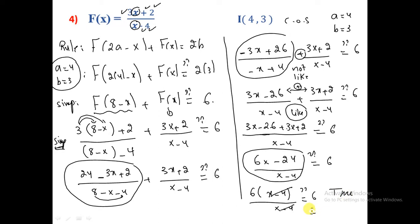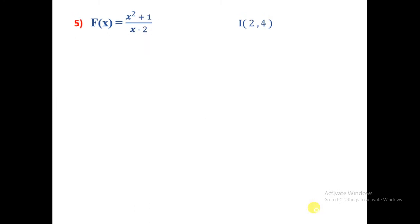Since we get 6 = 6, it is true. Therefore point I with coordinate (4, 3) represents a center of symmetry of this function. Last exercise: f(x) = (x²+1)/(x-2), and we want to prove I(2, 4) is a center of symmetry. So a = 2 and b = 4.